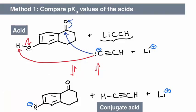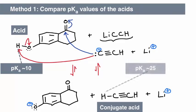To figure out the answer, we find the pKa values of the two acids, the acid and the conjugate acid. The phenol has a pKa value of approximately 10, whereas the pKa value of the alkyne is approximately 25.